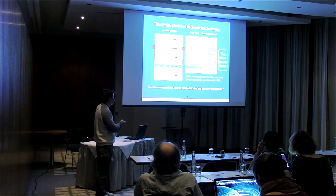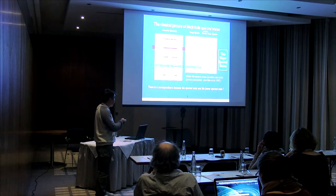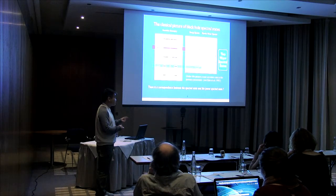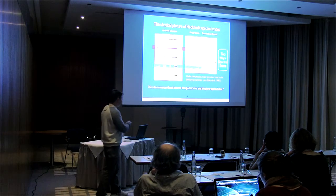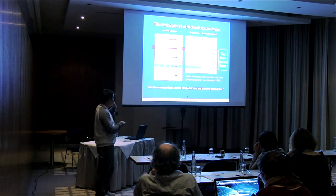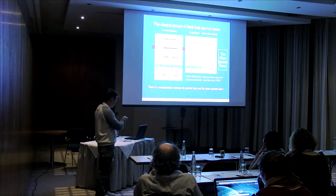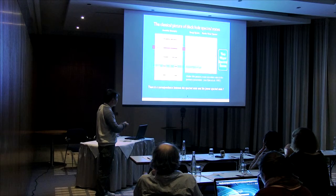On the black hole RXTE data, from an observational point of view, there's a correspondence between the accretion geometry — related to mass accretion rate — and the spectral and power spectral states. This is what I'm going to talk about.